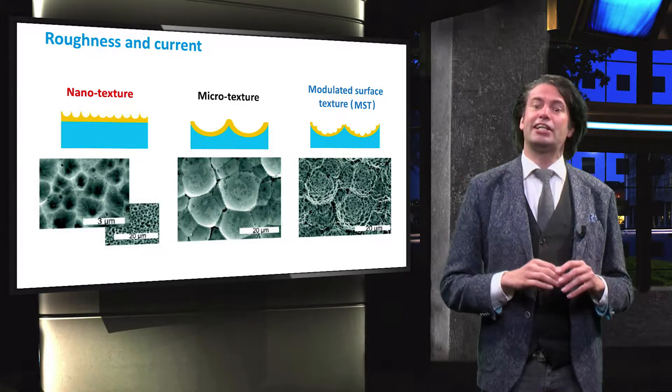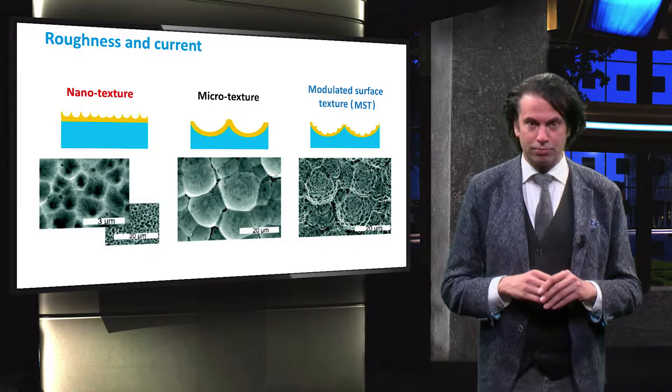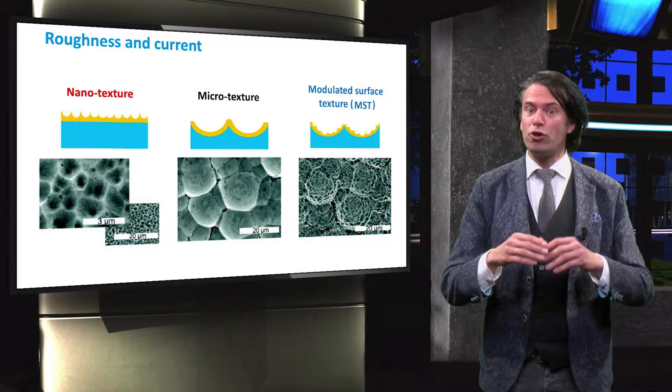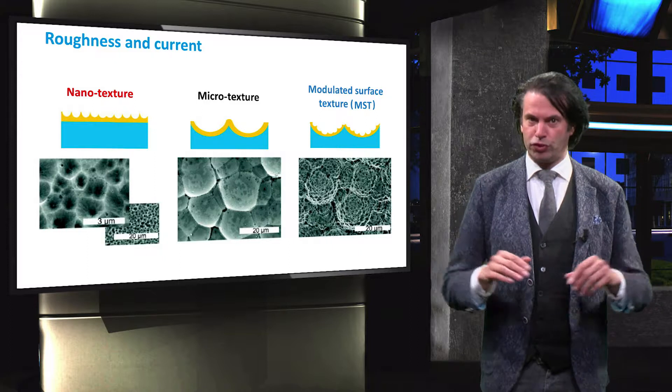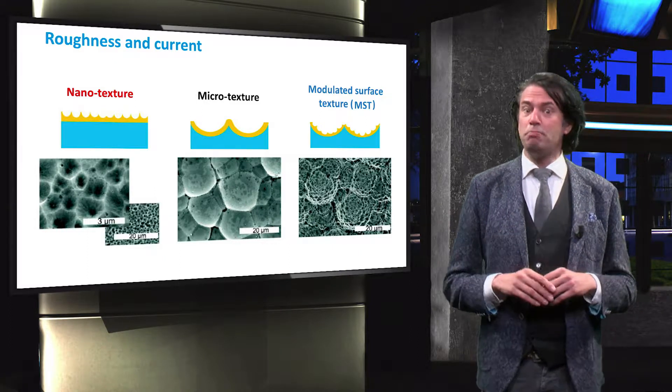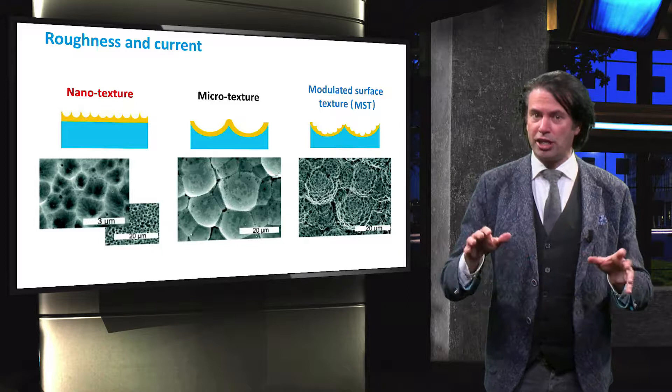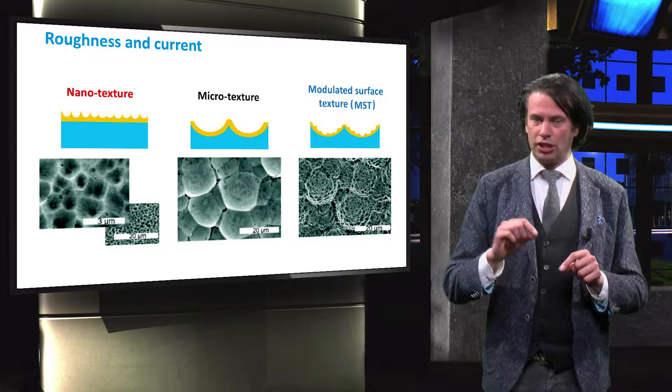The first is textured with random nano-sized surface features. The second has micro-sized random surface features. This has been obtained by applying a large-scale texture in the glass substrate before depositing the zinc oxide.